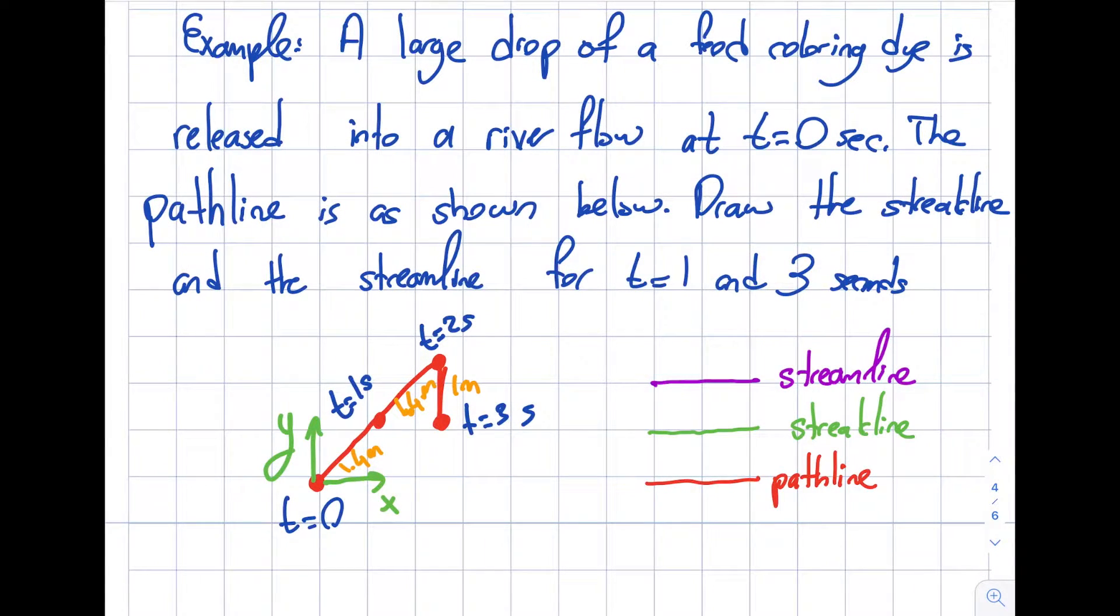Today I will be talking about a particular example where I will be able to distinguish streamline, streak line, and path line from one another. As we discussed in the previous module, the streamline, streak line, and path lines are exactly the same for steady flow.